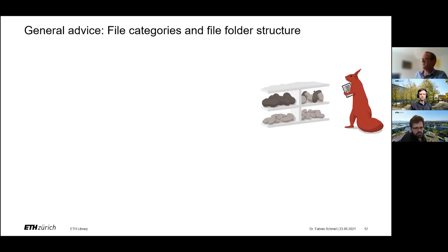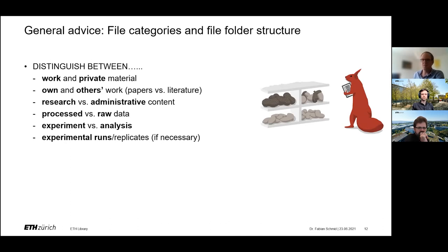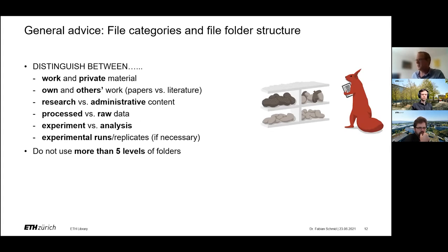Now we're coming to file categories and folder structure, and some good practices on that. You should make distinctions: between work and private material, between your own and others' works — for instance your papers and literature — and research and administrative content should be separated. Within the research folder, you should also separate processed and raw data, and experiment and analysis files can also be separated. You might also think of creating separate folders for experimental runs and replicates. A key advice is that you should not use more than five levels in your folder hierarchy — sometimes this is not fully implementable, but you should try.